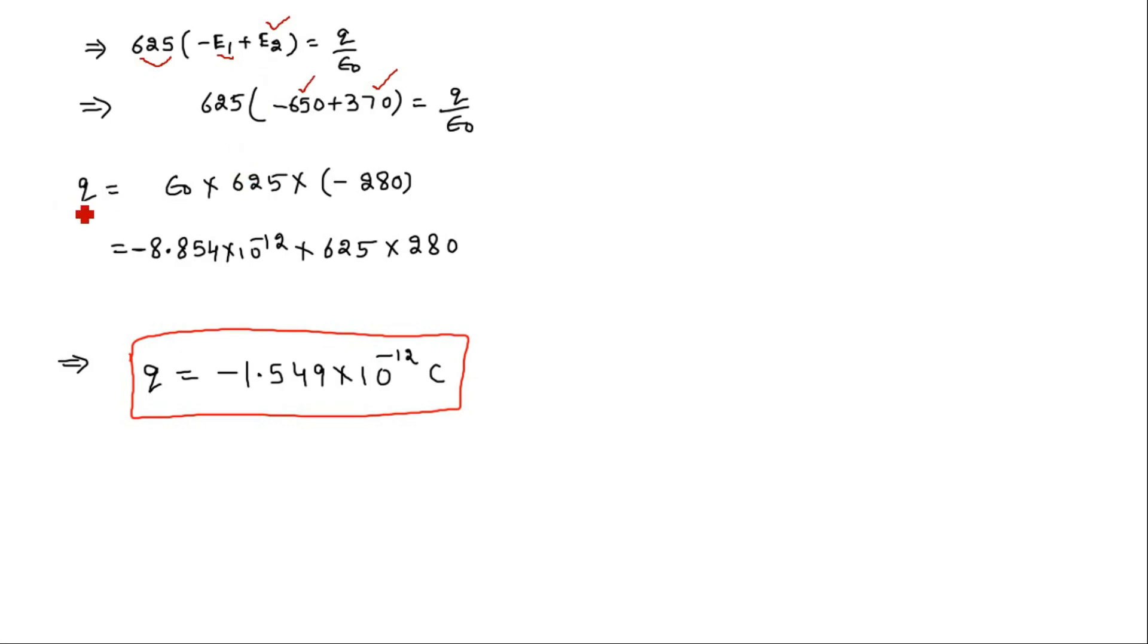If we put these values then we can write Q equals epsilon naught will come to the numerator after cross multiplication. So the value of Q will become epsilon naught times 625 times minus 280, which is actually the resultant of this value.